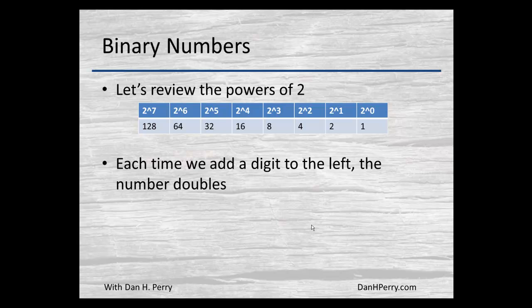With binary numbers, instead of powers of 10 for each digit, it's a power of 2. So looking at the powers of 2 in decimal, we went from 1 to 2 to 4 to 8, doubling each time, unlike decimal numbers when we increase by power of 10 each time.